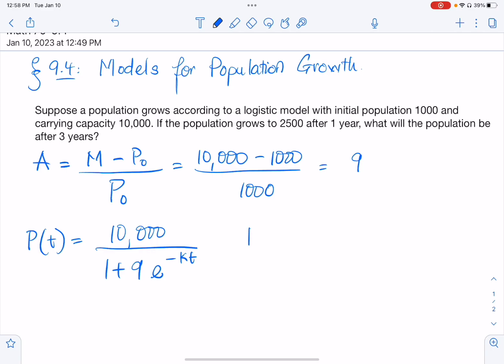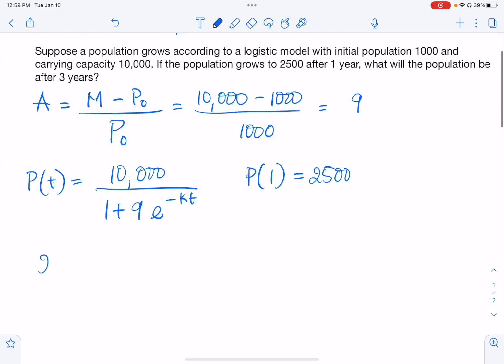We know that P of 1 is 2,500. You see right here, if the population grows to 2,500 after 1 year, therefore P of 1 is going to be 2,500. So now let's plug it in. So I have 2,500 equals 10,000 over 1 plus 9e to the negative K. T is 1.